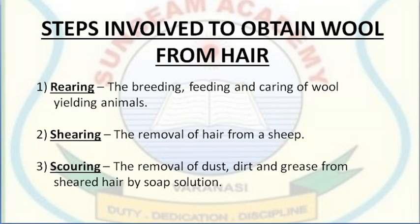Reared sheep are also fed on a mixture of pulses, corn, jowar, oil cakes and minerals. In winters, they are kept indoors and fed on dry fodder, leaves and grains.